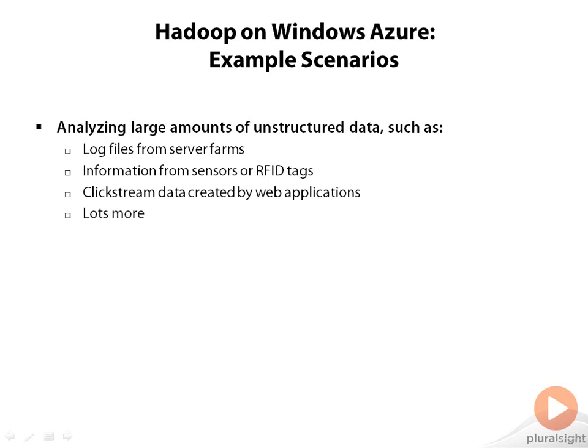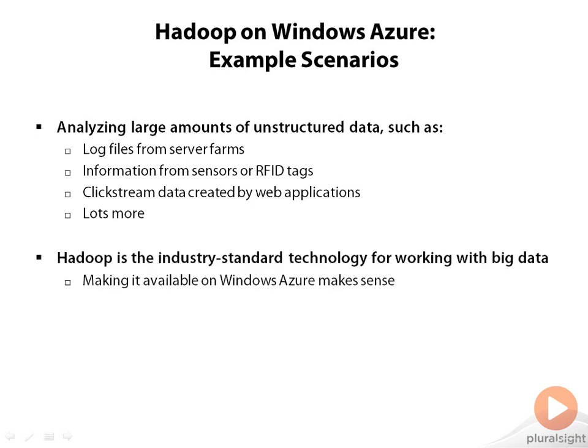The reality is that Hadoop, an open source technology, has become the industry standard for working with big data. Making it available in Windows Azure makes perfect sense. In the on-premises world, you use Hadoop in a cluster — a physical machine cluster — which is expensive and must be administered. In the cloud with Windows Azure, you could instead create Hadoop clusters from VMs and shut them down when you're done. The combination of Hadoop and a cloud platform like Windows Azure is a perfect match.